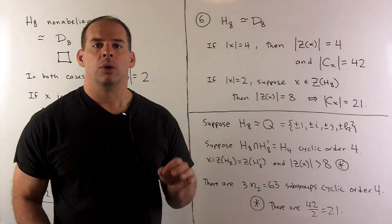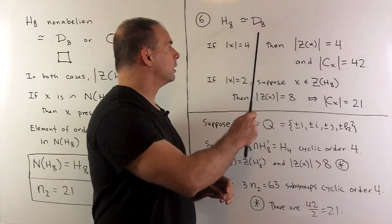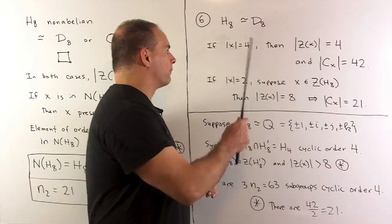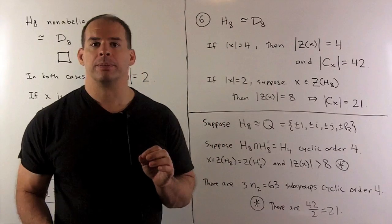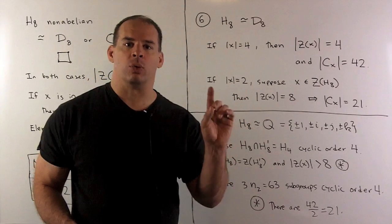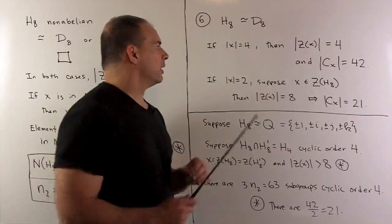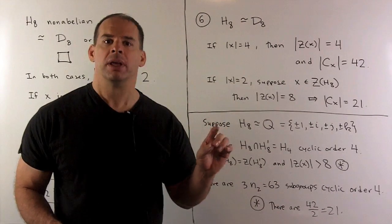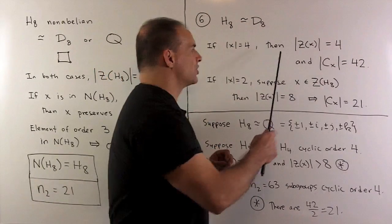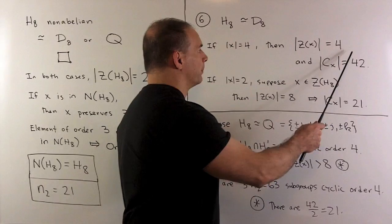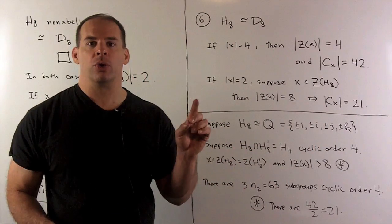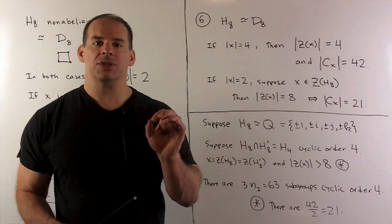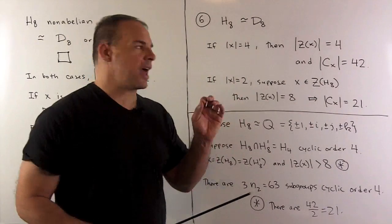Part six: we show that H8 is isomorphic to D8. Our first step is to compute the remaining conjugacy classes. If I have an element of order four, its centralizer will have four elements. If that centralizer had an element of order three or seven, that element would commute with the square of our original element — an element of order two — guaranteeing an element of order six or 14, which can't happen. So the centralizer is at most order eight. Checking with D8 or the quaternion group, the centralizer of an element of order four is exactly four. That means the conjugacy class for an element of order four has 42 elements.